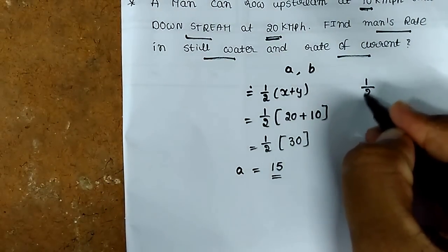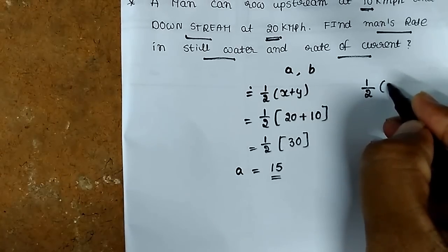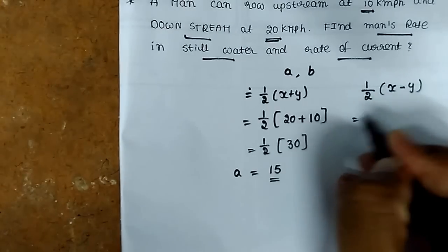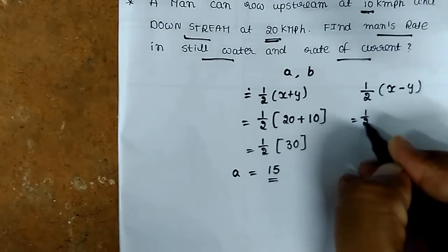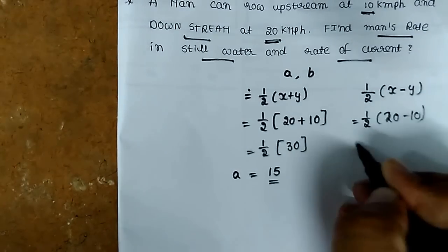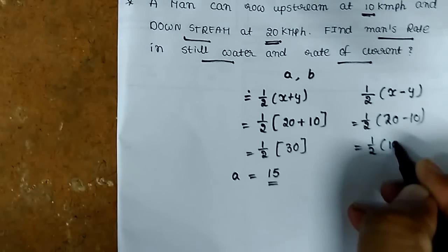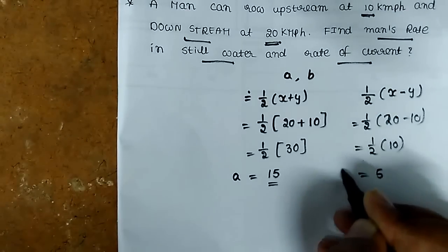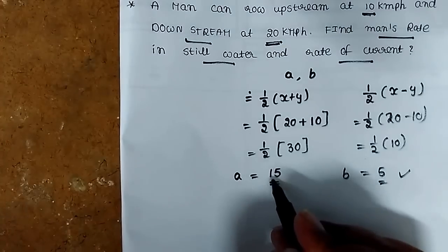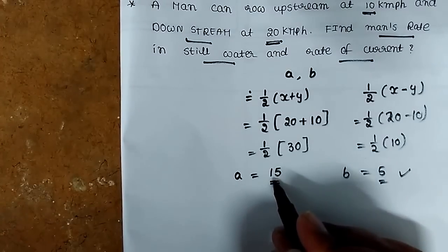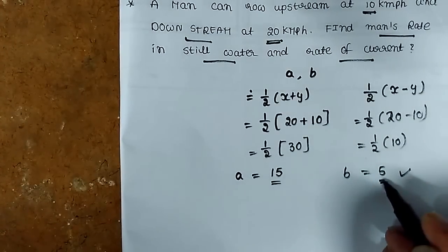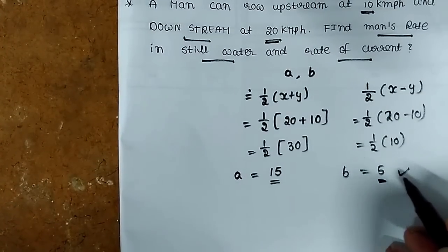Current speed is found using the formula: half of x minus y. That is half of 20 minus 10, which is half of 10, that is 5. So 5 is B, the rate of current.